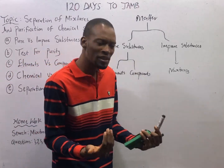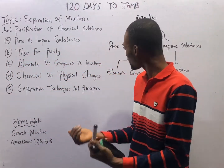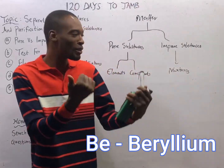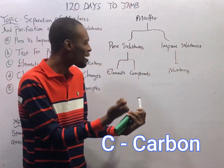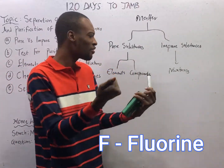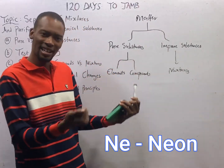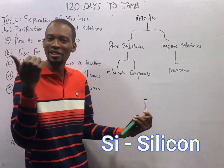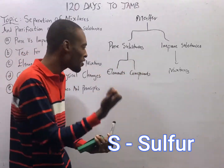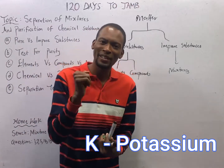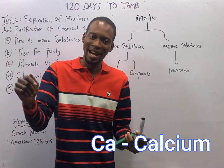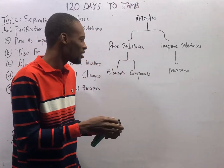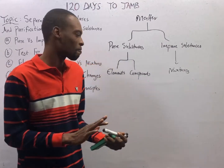The first 20 elements — examples of elements — are hydrogen, helium, lithium, beryllium, boron, carbon, nitrogen, oxygen, fluorine, and neon. Sodium, magnesium, aluminum, silicon, phosphorus, sulfur, chlorine, argon, potassium, and calcium. We also have silver and gold. These are elements.